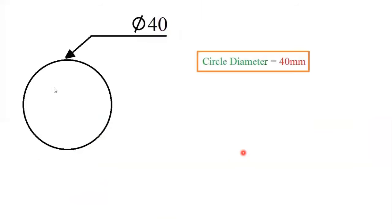The first step is to draw a circle with a diameter of 40 mm, so the radius will be 20 mm. Take a radius of 20 mm — that is 2 cm — with your compass and draw the circle.